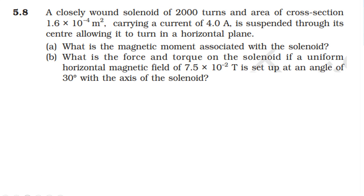So we have the solenoid number of turns N equals 2000, area of cross-section A equals 1.6 into 10 power minus 4 meter square, and the current through the solenoid is I equals 4 ampere. Now we need to find magnetic moment, force, and torque on the solenoid.